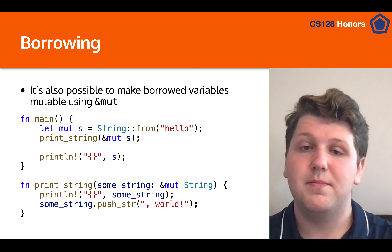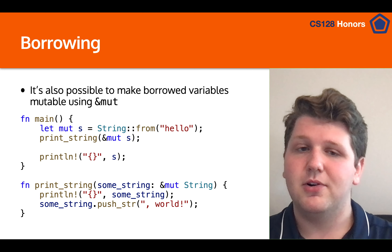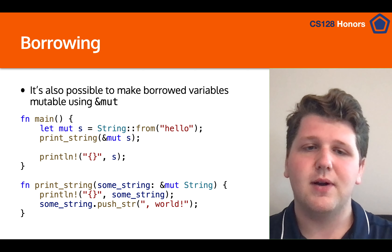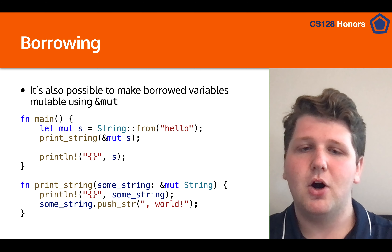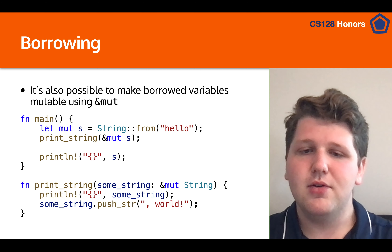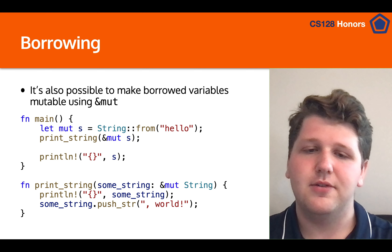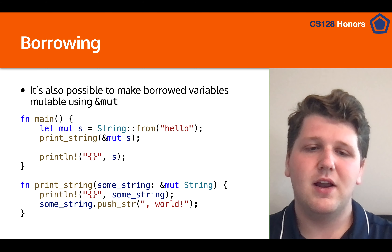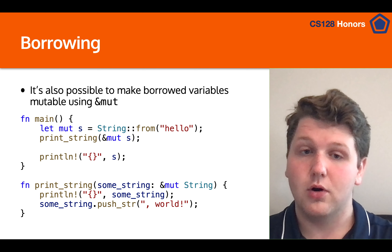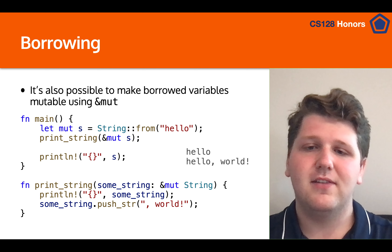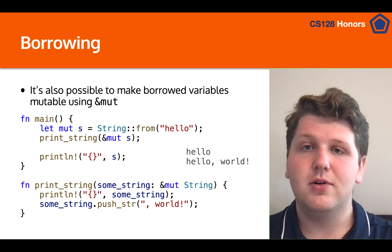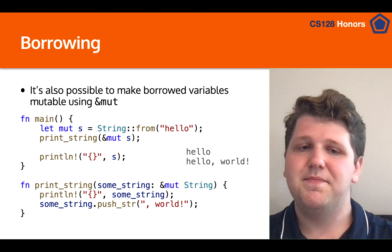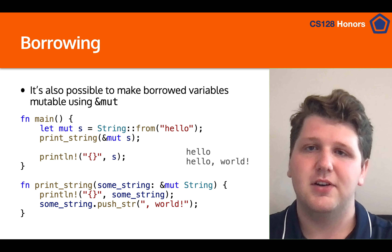It's also possible to make a borrowed variable mutable. If you have a mutable variable and you want to make a borrowed reference, you can borrow using `&mut` and now you can change it — for example, add something to it. In this case we have a string and we're pushing 'world' to it. The output will be 'hello' and then 'hello world', because the first print_string takes it, prints it, and because it's a mutable borrow it pushes 'world' to it, then returns ownership back to s, and then s is printed out after that.